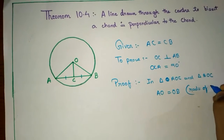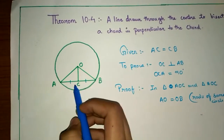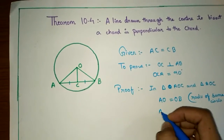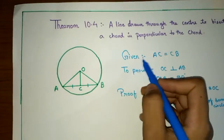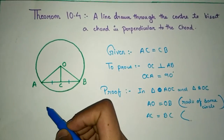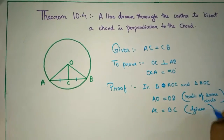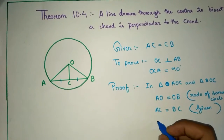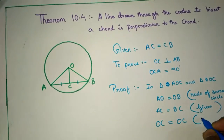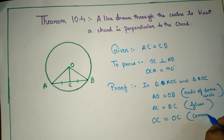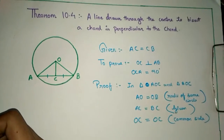The reason is: radii of the same circle. And SC is equal to BC — the reason is: given. Also, OC is equal to OC because OC is a common line — the reason is: common.